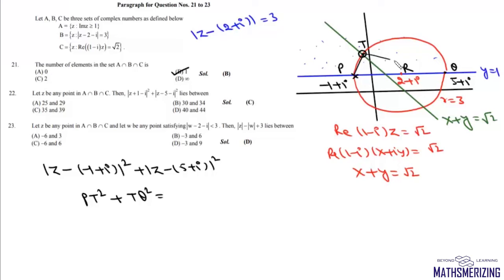Now since PQ is diameter of the circle and this angle will be 90 degrees, then from Pythagoras theorem we know that PT square plus TQ square must be equal to PQ square. And what is the value of PQ? PQ is diameter of this circle which is 6. So 6 square is 36. So this value is 36 and it'll lie between 35 and 39 and that's your option C.